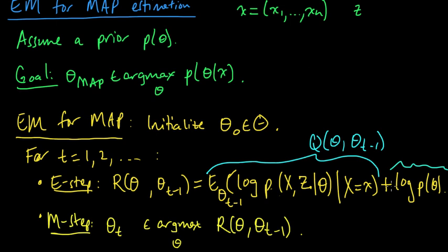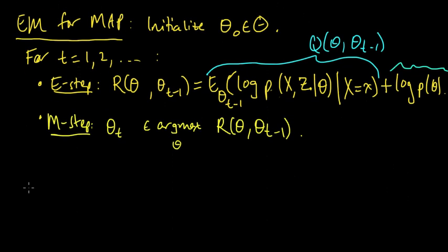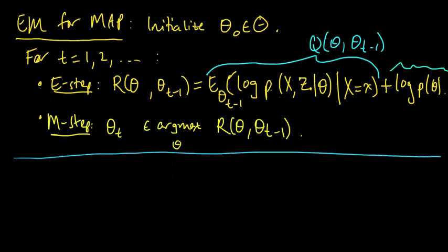Very simple modification. And it turns out that doing the maximization can often be done analytically when you have an exponential family and all that good stuff. I also want to show you that we can get the same guarantee for this procedure that we had for the MLE. In the MLE, we had that the sequence of likelihoods was non-decreasing, and we have the same guarantee for this procedure. Let's see why that's the case.